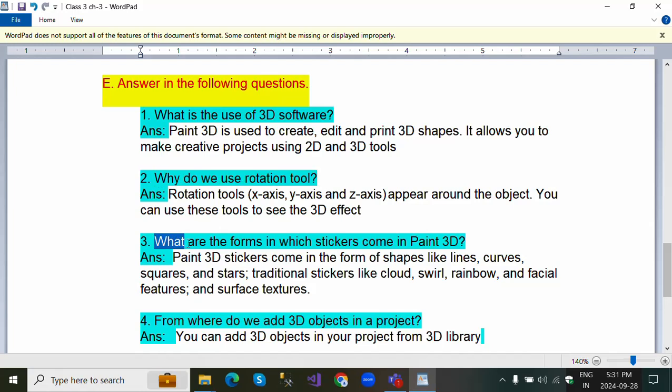What are the forms in which stickers come in Paint 3D? Paint 3D stickers come in the form of shapes like lines, curves, squares and stars, traditional stickers like cloud, swirl, rainbow, and facial features, and surface textures.